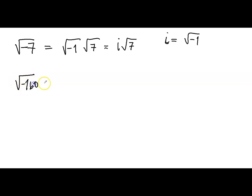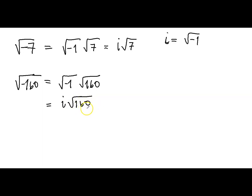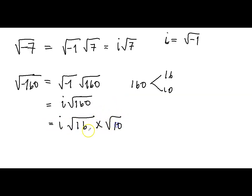Another example: the square root of negative 160. We write this as the square root of negative 1 times the square root of 160, giving us i times the square root of 160. We can simplify further by factoring 160 as 16 times 10, so it becomes i times the square root of 16 times the square root of 10, which equals 4i times the square root of 10. This is the final simplified answer. Always simplify to the simplest form.